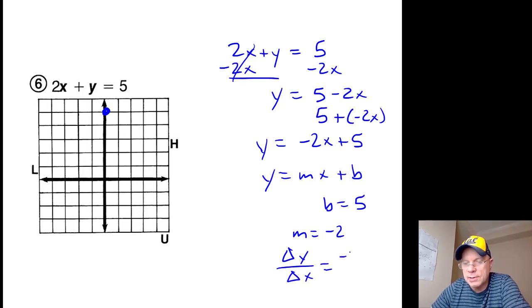We could represent the ratio of negative 2 over 1, and so down 2, right 1. You can keep going down 2, right 1, continuing this pattern. It's going to intersect at u.